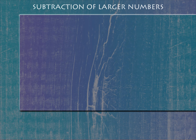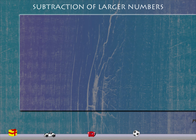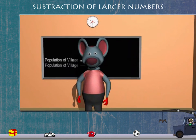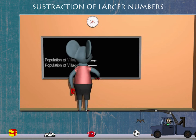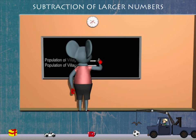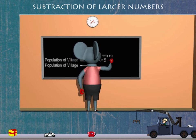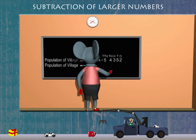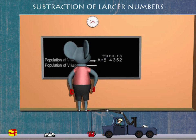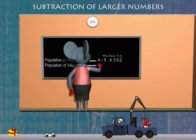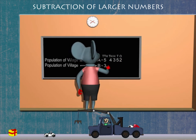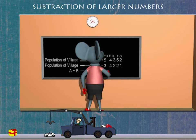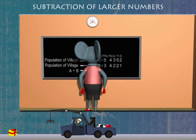Subtraction of larger numbers. Robbie is back in class with his village population question. Village A has fifty-four thousand three hundred and fifty-two people. Village B has thirty-four thousand two hundred and twenty-one people.